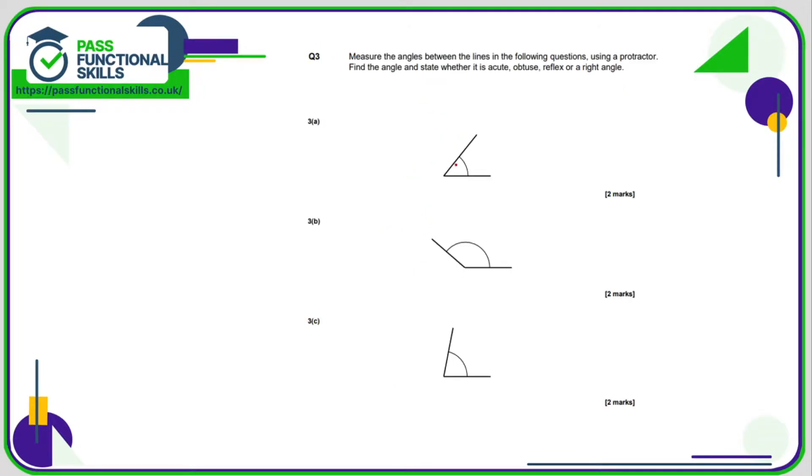Here we need to measure the angles using a protractor. Now obviously this is quite hard to demonstrate online. However, this angle here is clearly somewhere between 0 degrees and 90 degrees. And if you get your protractor out, you should measure that as 50 degrees.